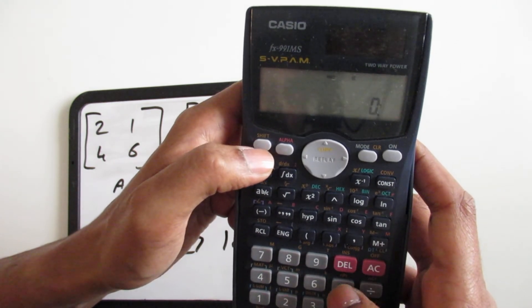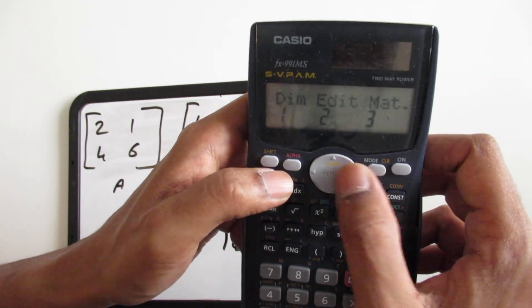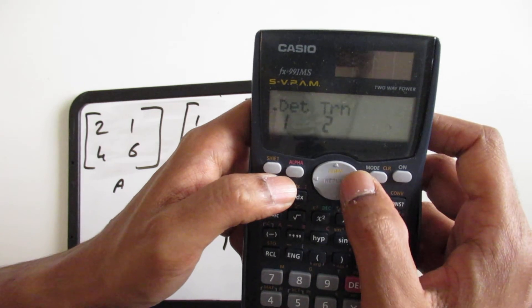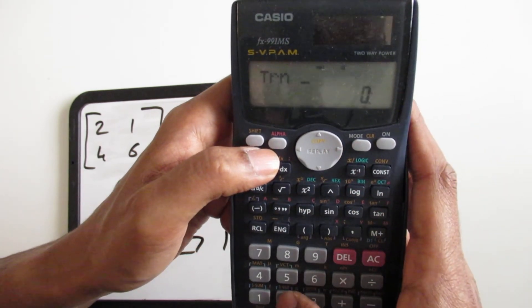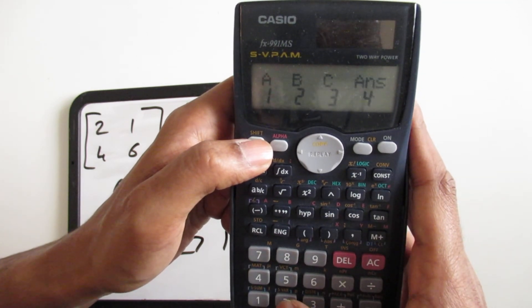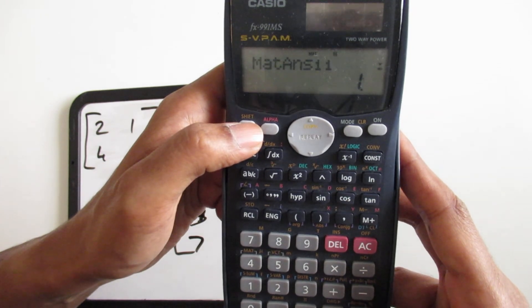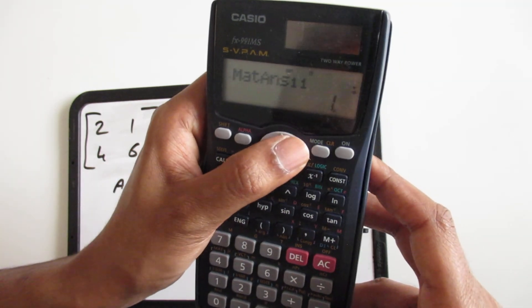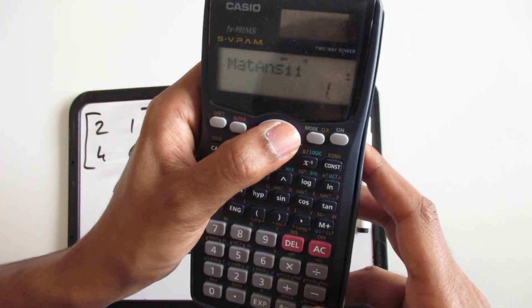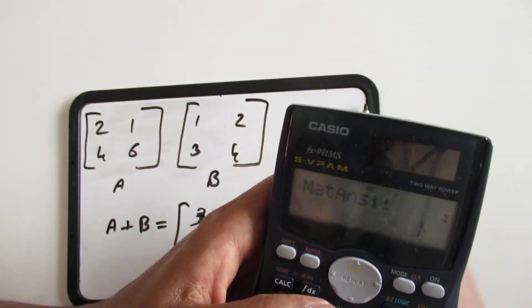You can also find the transpose just by clicking the right arrow and transpose of matrix B. The transpose of matrix B, you get 1, 3, 2, 4.